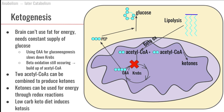Instead, what's going to happen is we're going to take all this acetyl-CoA that has been building up because the Krebs cycle is backed up. We take two acetyl-CoA molecules and add them together in a chemical reaction that produces ketones. These ketones can be used as energy — the brain can adapt to using ketones as energy.